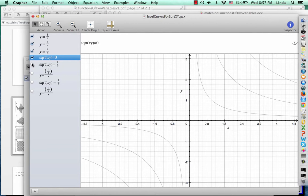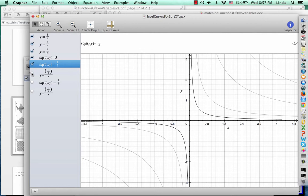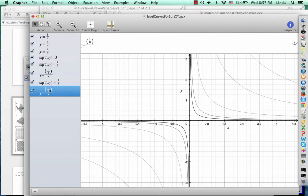We could also plot square root of x times y equals 1 half, which is the same as the equation y equals 1 fourth over x, or square root of x times y equals 1 third, which is the same as y equals 1 ninth over x.